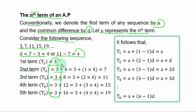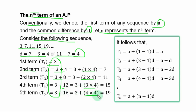Now look at 4, 8, 12, and 16 — they are all multiples of 4. So we can express 4 as 1 times 4, 8 as 2 times 4, 12 as 3 times 4, and 16 as 4 times 4, factoring out the common difference from each term.